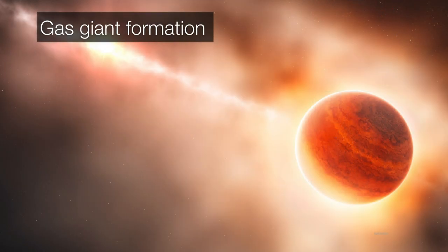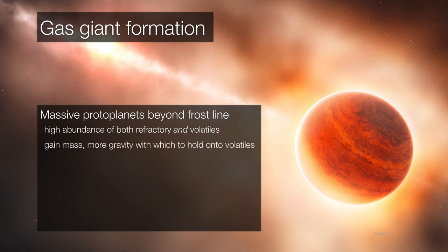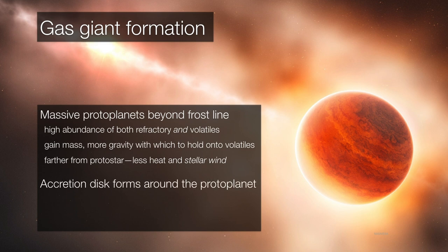So returning our attention to the gas giants, remember, they too are forming out of little disks within the disk. Remember, they're going to form well beyond the frost line, where there is a high abundance of both refractory elements and volatiles, so they have everything. They gain mass by just colliding with additional planetesimals. And because they have more mass, because they're now proper proto-planets in their own right, they're able to accrete these volatiles. Remember, they're farther from the protostar, so there's less heat, there's less stellar wind, and there's a greater abundance of these volatiles to begin with. So an accretion disk forms around the proto-planet. It's like a disk within a disk.